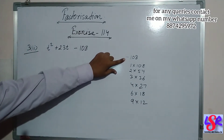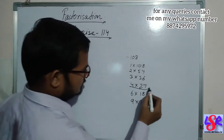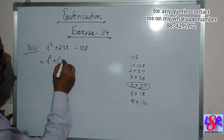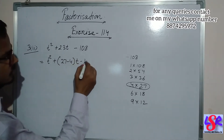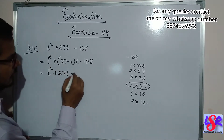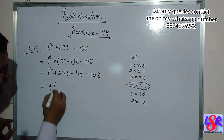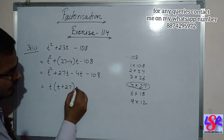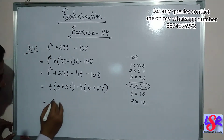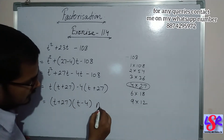Now we are having a minus sign, so we are going to subtract any two factors to get 23. Here we can take 4 and 27, since 27 minus 4 is 23. So this is written as t square plus 27t minus 4t minus 108. Taking t common gives t plus 27, and taking minus 4 common also gives t plus 27. The answer is t plus 27 into t minus 4.